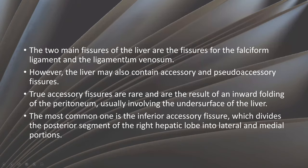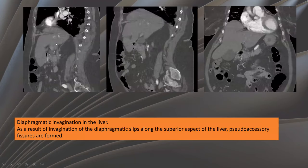The liver has two fissures — the falciform and ligamentum venosum — and may also contain accessory or pseudo-accessory fissures. However, two accessory fissures are rare, and the most common important one is the inferior accessory fissure, which divides the posterior segment of the right lobe into medial and lateral portions. Here, a patient with pseudo-accessory fissure due to invagination of the diaphragm into the superior aspect of the liver is seen on coronal and sagittal reformatted images.